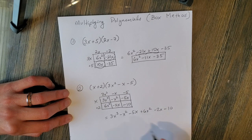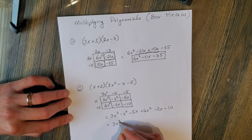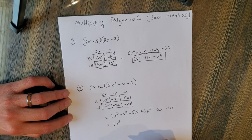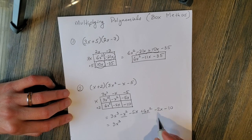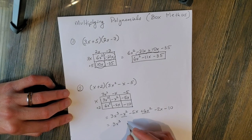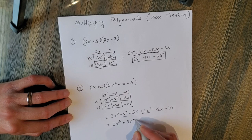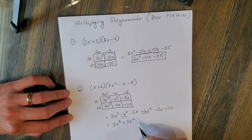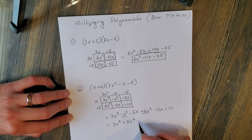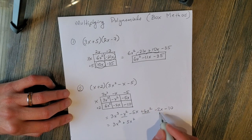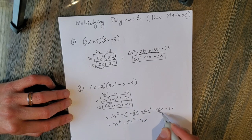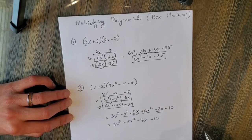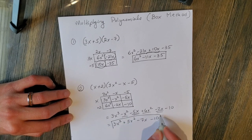Now that I've filled in all the boxes, I write out the polynomial and look for like terms. 3x to the third has no like terms, so it comes down as is. Then negative x squared and positive 6x squared combine to give positive 5x squared, because 6 minus 1 is 5 — notice the exponents remain the same when combining like terms. Negative 5x and negative 2x make negative 7x. And finally, negative 10 ends the problem.